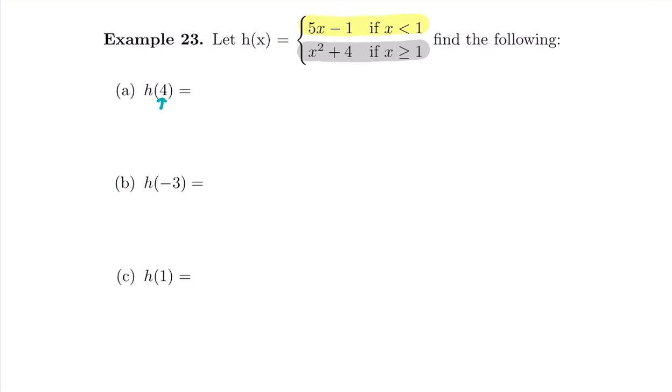First, we want to plug in x equals 4 and figure out what that y value would be. Is 4 strictly less than 1, or is 4 bigger than or equal to 1? Well, 4 is bigger than 1, so we're going to plug into that bottom piece. We're going to do 4 squared plus 4, which gives us 16 plus 4 equals 20. You could replace that x with a 4 in parentheses in your calculator to plug it in, and we'd be plugging into the bottom piece because we have a number bigger than 1.